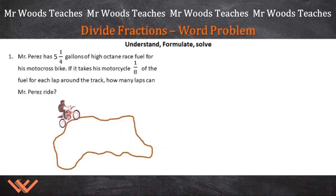Today's quick clip math video, we're working on a word problem. So let's take a look at this. Mr. Perez has 5 and 1/4 gallons of high octane race fuel for his motocross bike. If it takes his motorcycle 1/8 of the fuel for each lap around the track, how many laps can Mr. Perez ride? Look at him going around this track.